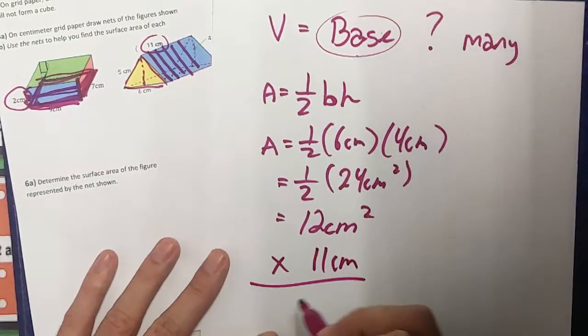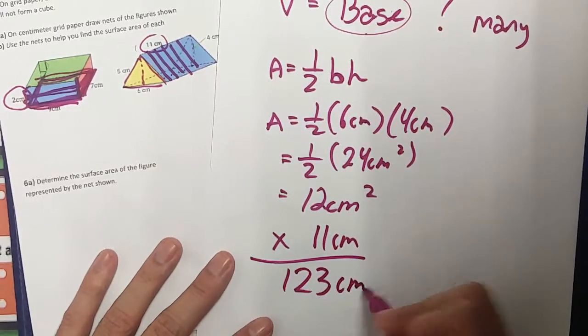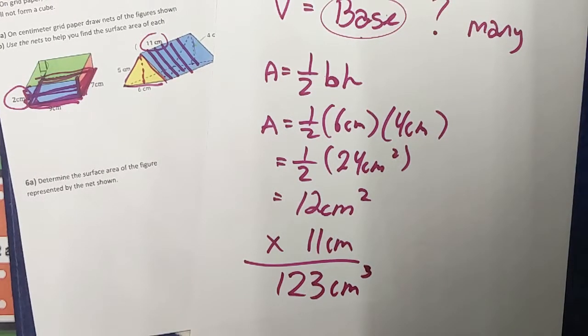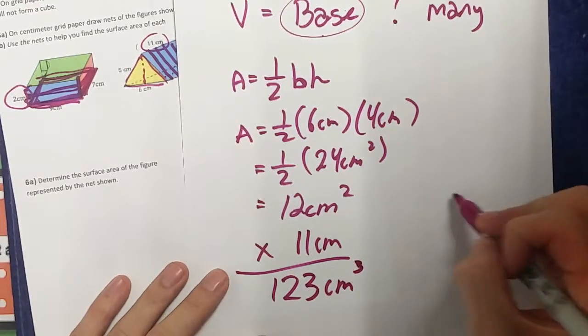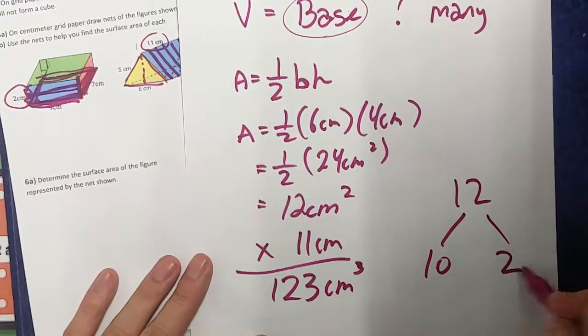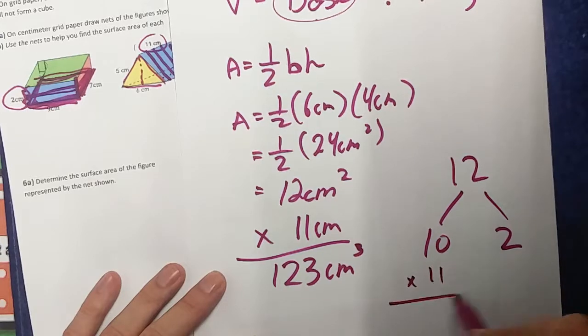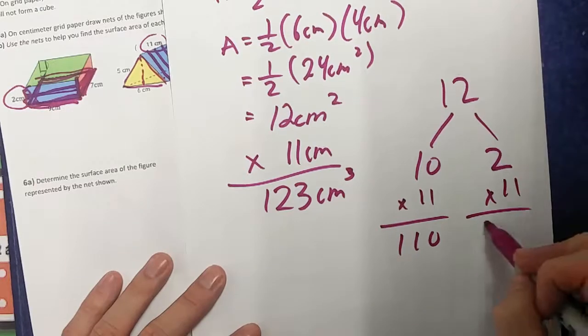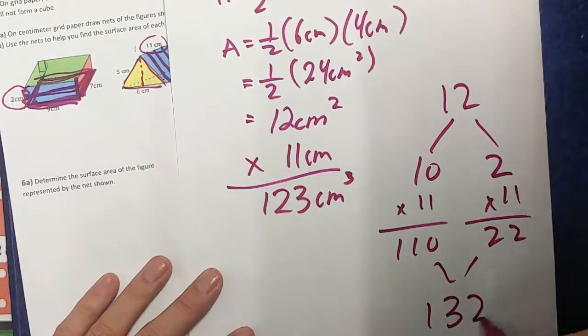So 12 times 11. If I do my mental math really quick, 1, 1, 2, 3... I have to double-check that math there. Actually, I need to double-check this. Let me use my number bonds. So 12, I know 12 can split up to 10 and 2. Well, 10 times 11, I know that's 110, and 2 times 11, that's 22. So if I add them together, oh it's not 123, it's actually 132.